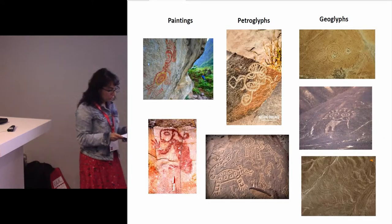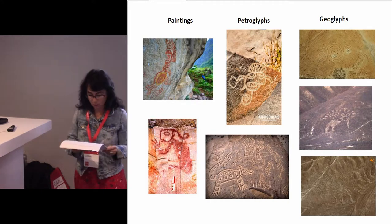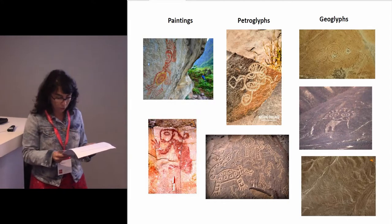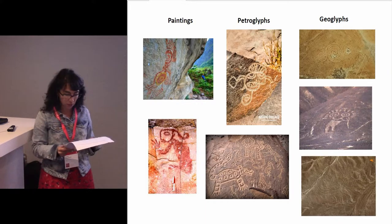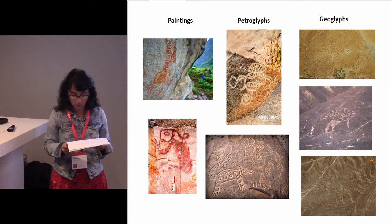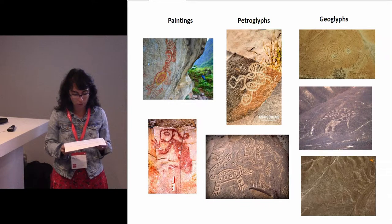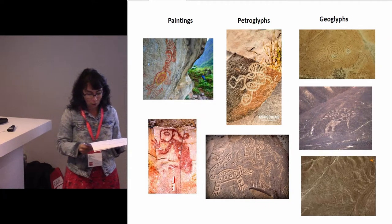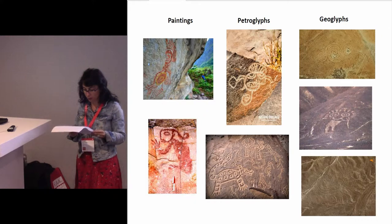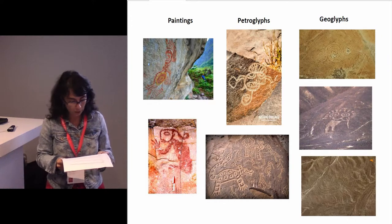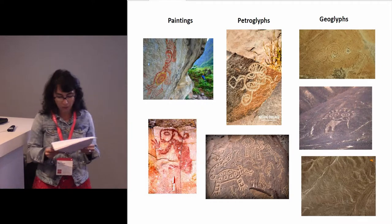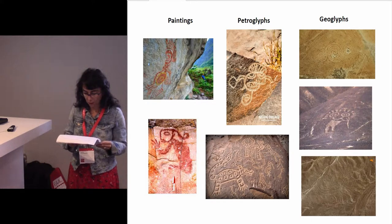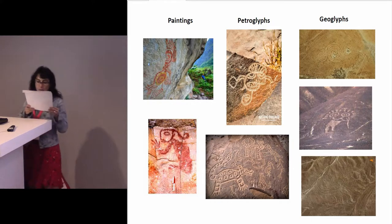There are three technological types documented in the Andean area: geoglyphs, paintings, and petroglyphs. They are always manifestations that take place outdoors, being, until today, one of the main characteristics of Andean rock art. Andean rock art is normally painted and engraved in boulders, isolated rock walls, rock shelters, apses and shallow caves, and rocky hill sites.